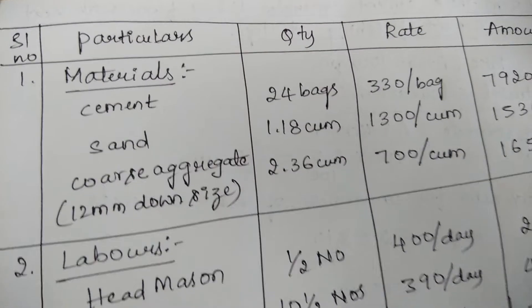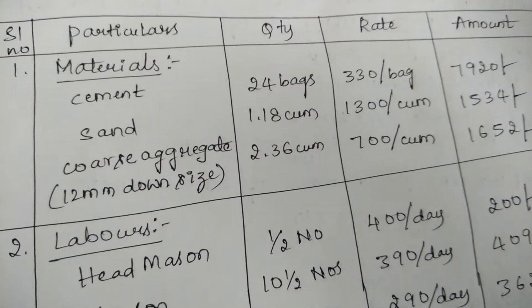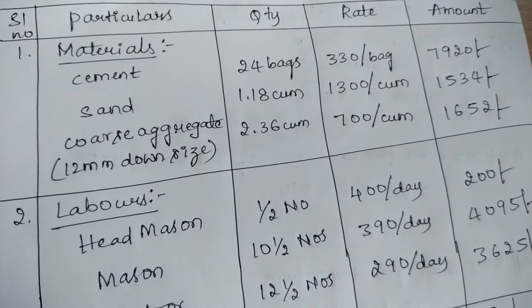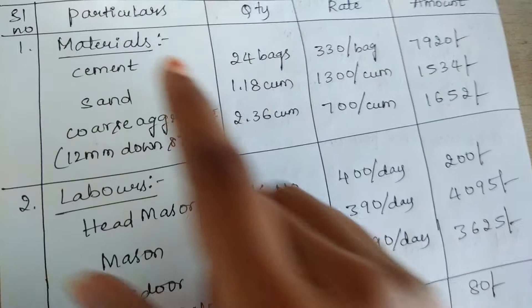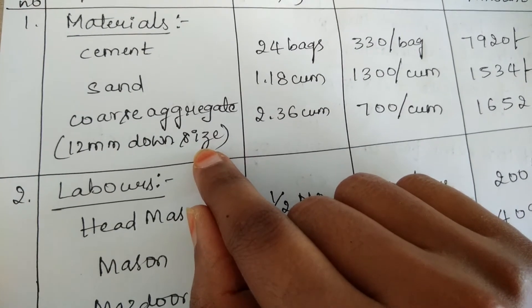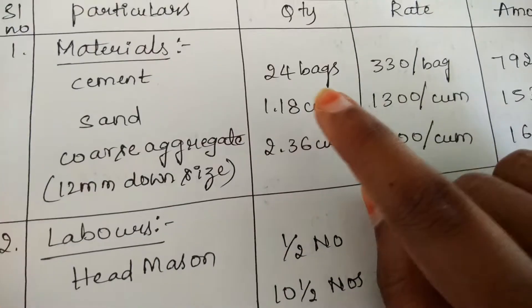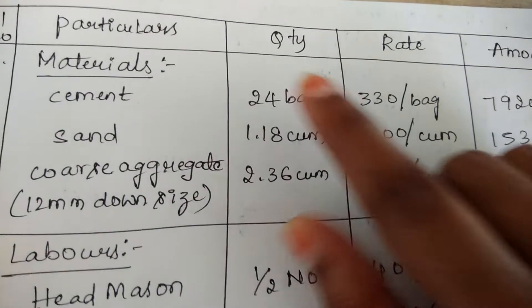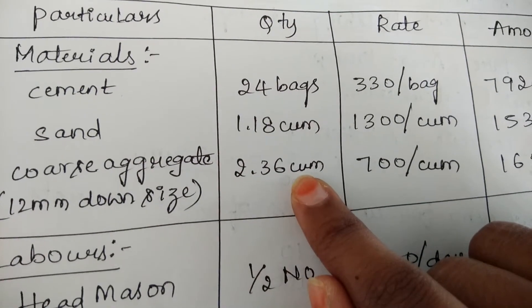After finding all the material calculations, let us draw the table. The table should consist of serial number, particulars, quantity, rate, and amount. We are having three types of materials: cement, sand, and coarse aggregate. The coarse aggregate used for flooring will be 20 mm downsize stones. The quantities found earlier — 24 bags of cement, 1.18 m³ of sand, and 2.36 m³ of coarse aggregate — are copied into this table.